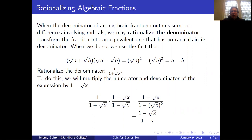When the denominator of an algebraic fraction contains sums or differences involving radicals, we may rationalize the denominator — transforming the fraction into an equivalent one that has no radicals in its denominator. We use the fact that (√a + √b)(√a - √b) = a - b. So to rationalize 1 over (1 + √x), we multiply numerator and denominator by (1 - √x): that's (1 - √x) over (1 - √x)², which gives us (1 - √x) over (1 - x).